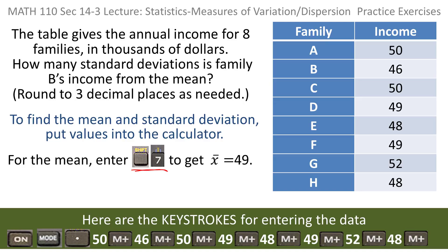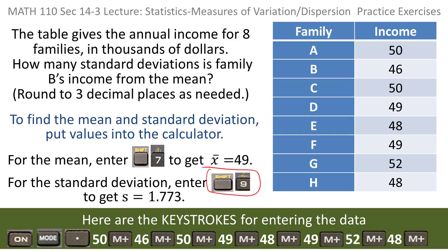Shift 7 gives us the mean that comes out to be forty nine. Shift 9 gives us the standard deviation and that comes out to three decimal places to be 1.773.